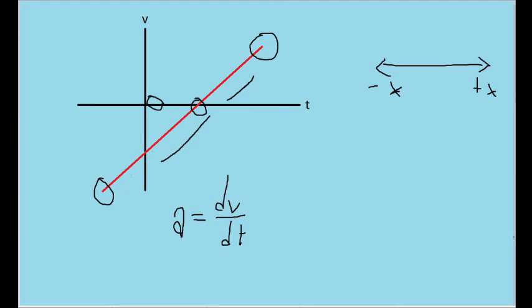But when the graph does look very straight, then it's not an unreasonable assumption or simplification to make. So with a fair amount of confidence, we can call the particle's acceleration here constant.